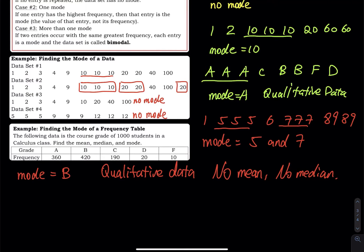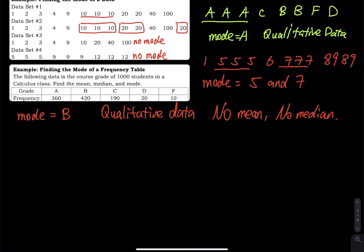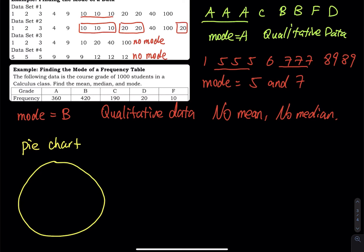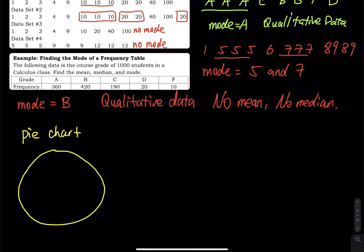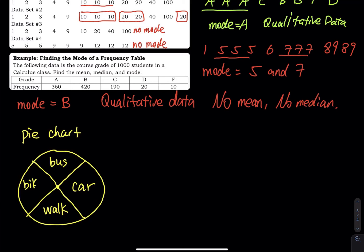Another type of example uses a pie chart. Imagine a circle cut into multiple pieces. For example, I ask: what type of transportation do you use to go to work or school? The options are: car, bus, walk, or bike. Say 300 people use a car, 200 take a bus, 50 bike, and 10 walk. What kind of data is this? It is qualitative data.